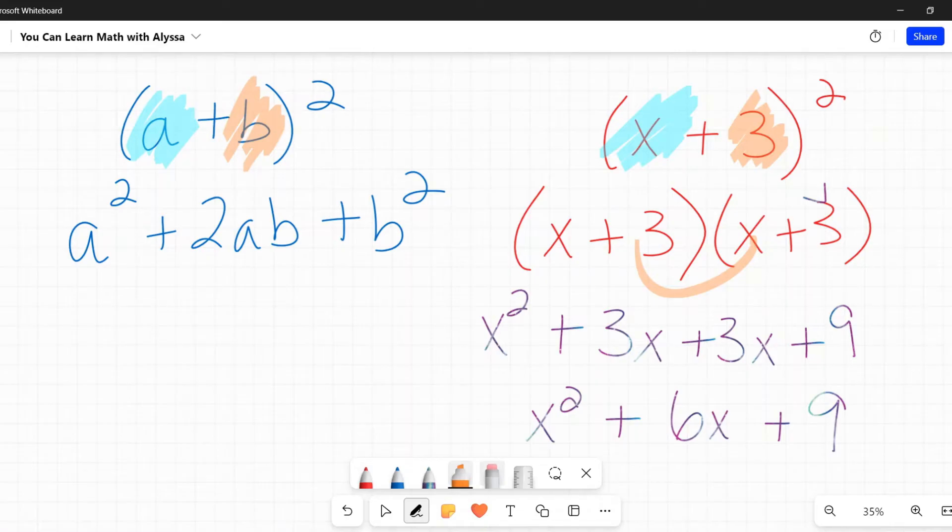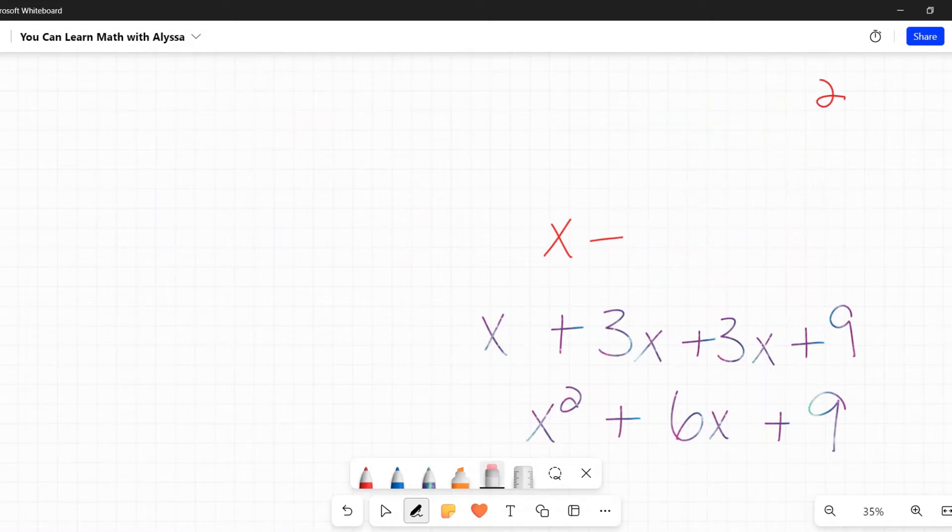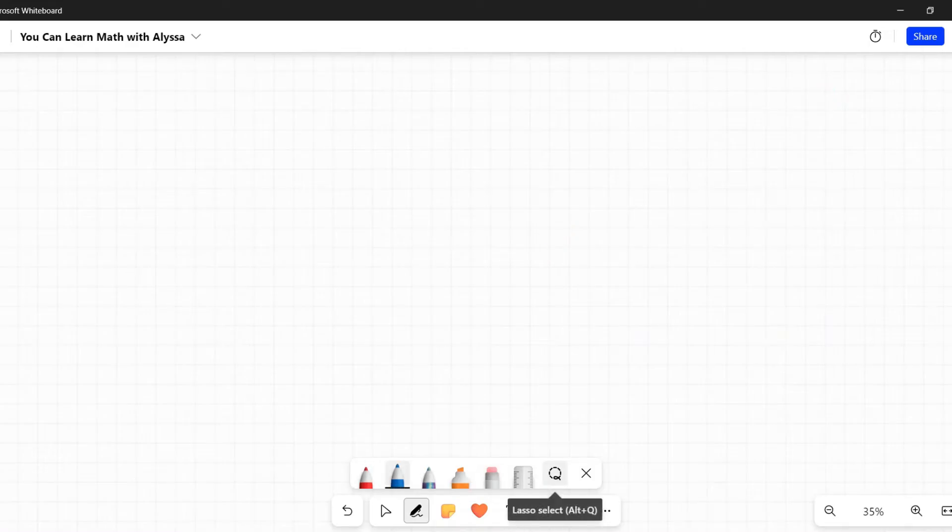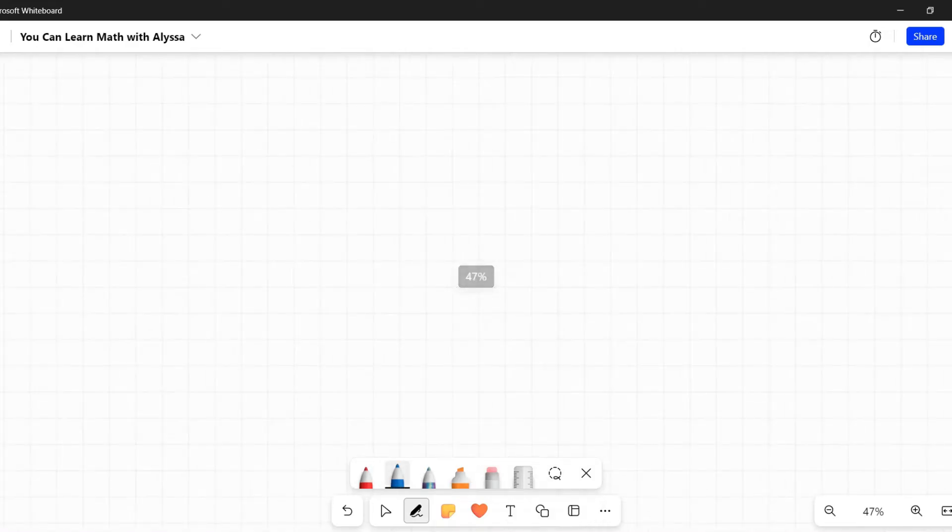So you see what's happening. This first x is being multiplied by itself, which gives me my x squared. That last number 3 is getting multiplied by itself. And then I'm getting a 3x and a 3x. So I have two pairs of 3 times x. That's where the 2 times A times B comes from. Let's try it with something with a number in front of it, like 3x minus 5.